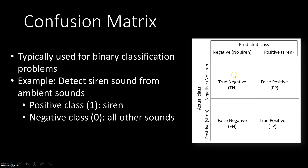On the diagonal we have true negatives and true positives. A true negative is when a sample actually belongs to the negative class and the model also correctly predicts it as negative. Similarly, a true positive is when a sample actually belongs to the positive class and the model correctly predicts it as positive. Our goal is to maximize the number of true positives and true negatives, because those are the correct predictions.